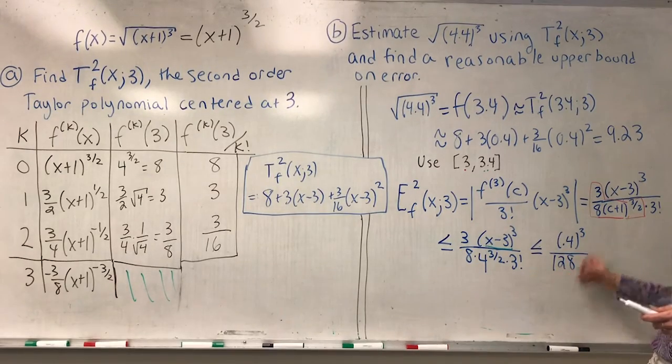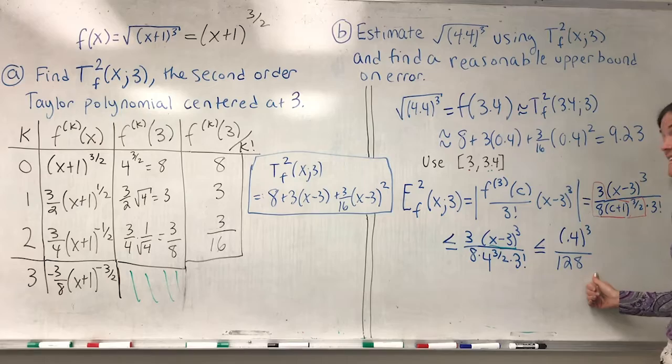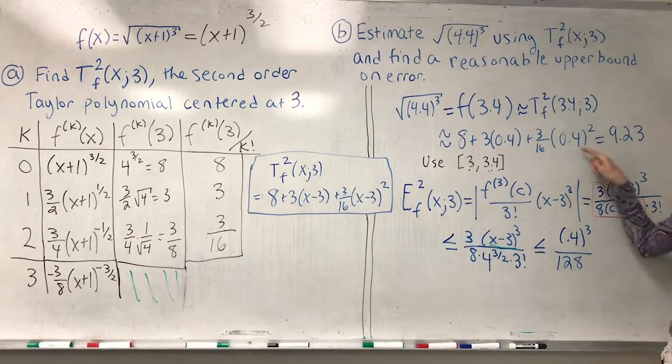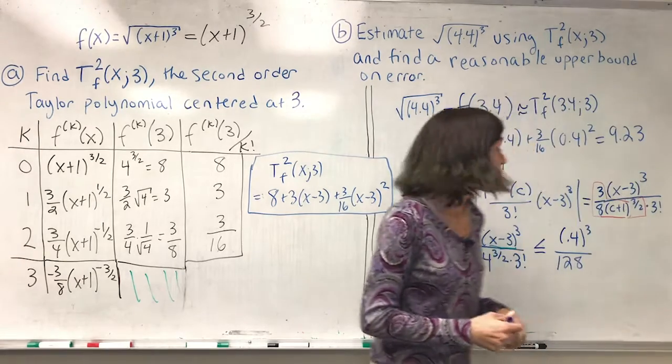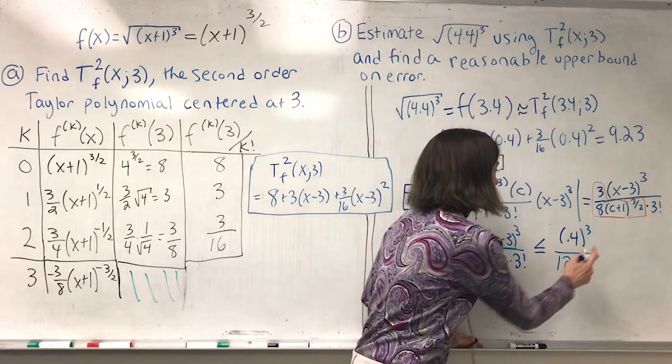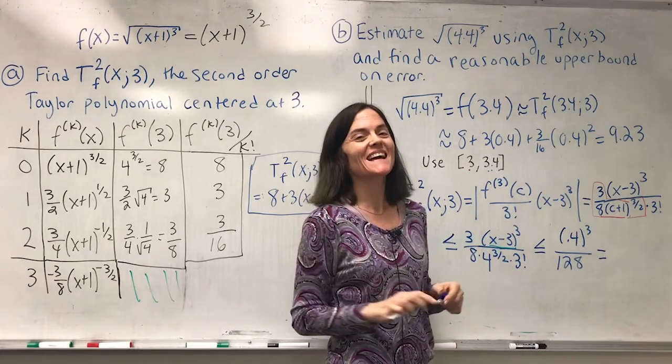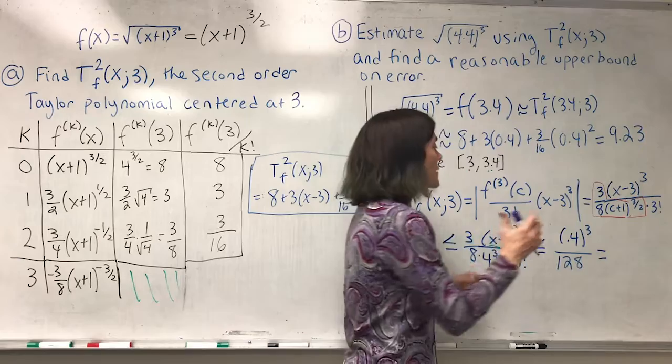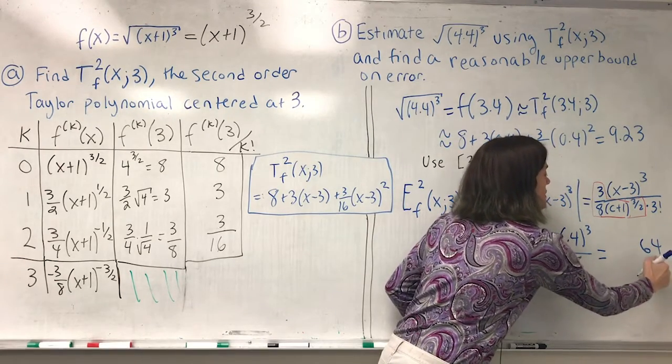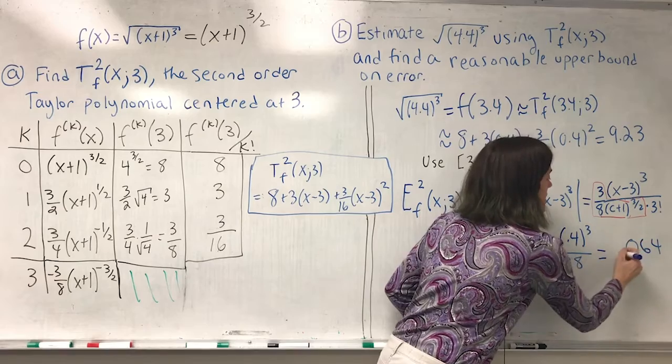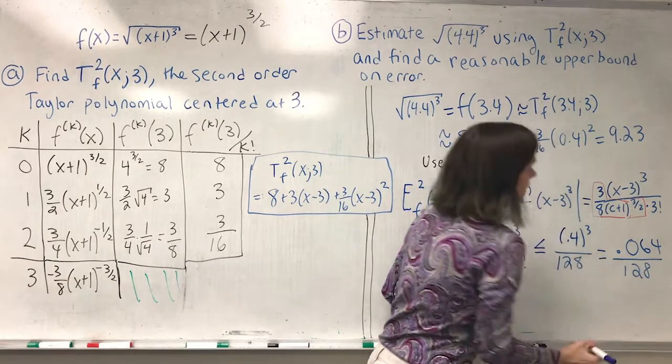This gives us an upper bound on the error in this calculation. We could get this as a decimal easily, because here, 0.4 cubed is 64, but then I move the decimal place over 1, 2, 3 times, and then over 128.